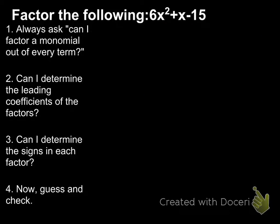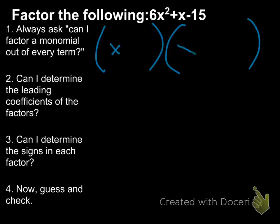Alright. So this one is 6x squared plus x minus 15. Can I take a monomial out of each term? It doesn't look like there's anything that I can factor out at the beginning. So we're just going to deal with 6x squared plus x minus 15. The next question, can I determine the leading coefficients of the factors? Here's my factors. I know I've got to have an x, but do I immediately know what my leading coefficients are? No, I don't.